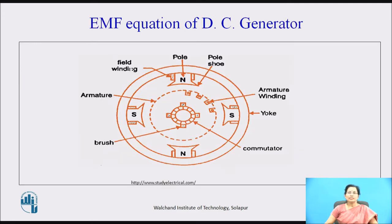A DC generator is the device which converts mechanical energy into electrical energy. When we rotate the armature winding in a magnetic field, according to Faraday's law, EMF is induced in the armature winding.